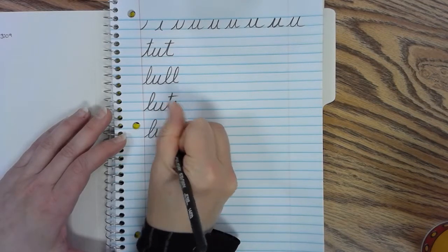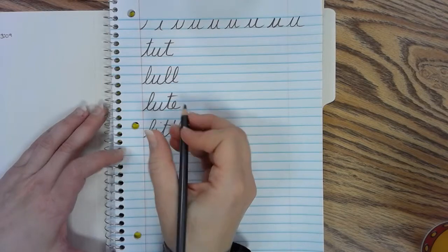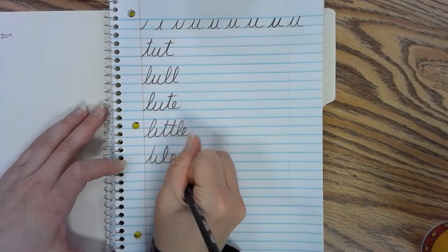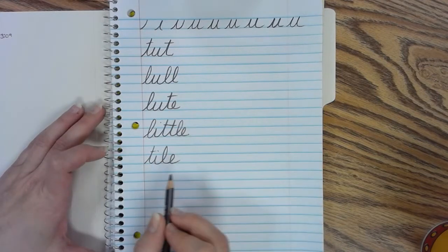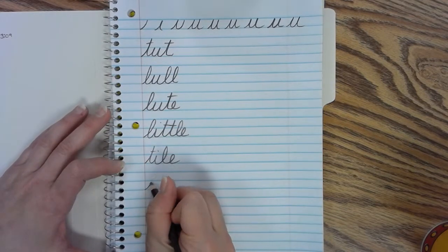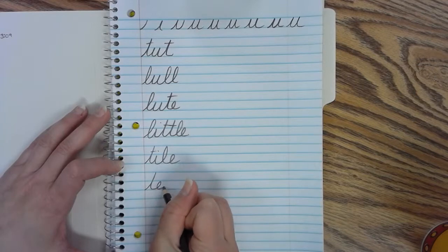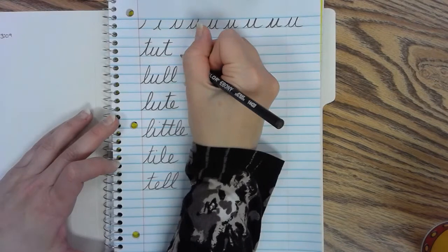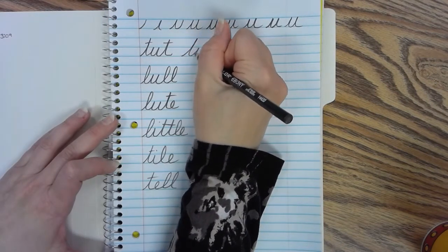Little. Tile. Again you want to make sure that you stay on a slant. That's the tricky part about cursive.